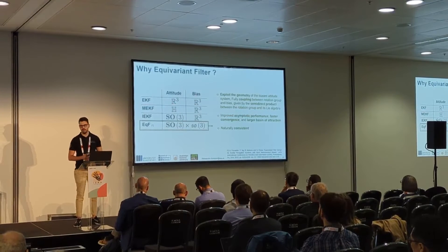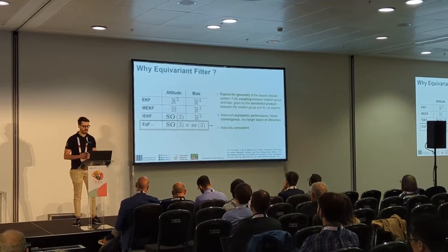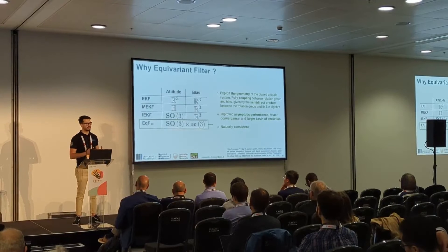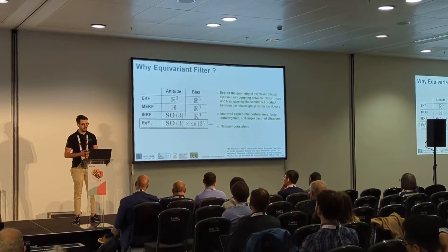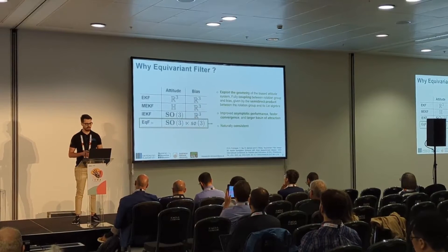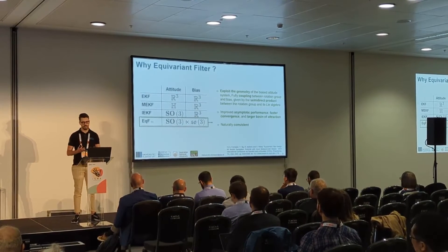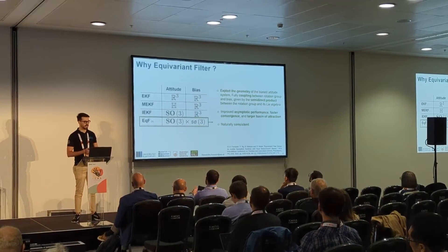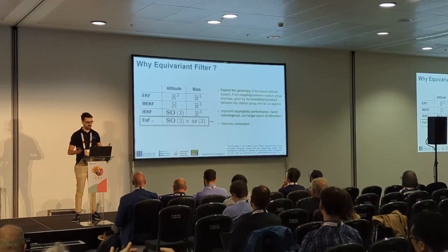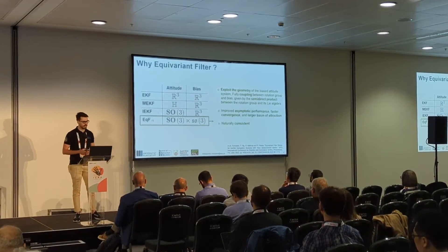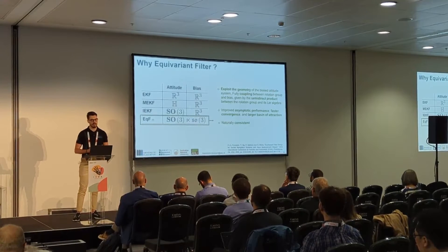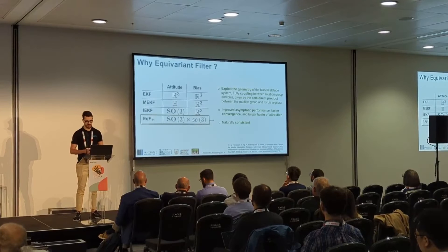Then we have the equivariant filter, which is a new approach that actually tries to exploit the full geometry of the system, coupling together the attitude and the gyroscope bias, thanks to the semi-direct product group — the cotangent bundle group of SO3. Exploiting this symmetry results in a filter that has improved asymptotic performance, faster convergence, larger basin of attraction — so more robustness to wrong initial conditions — and a filter that is actually consistent, meaning that it correctly estimates the true distribution of the error.